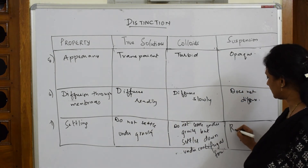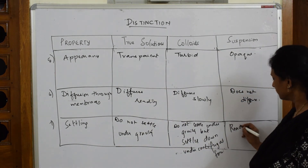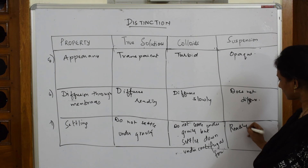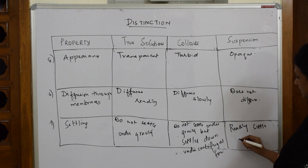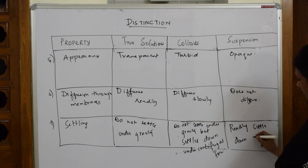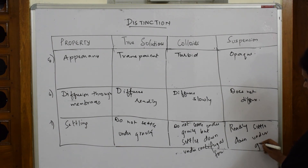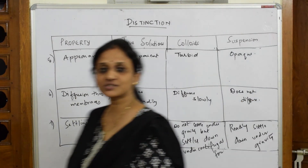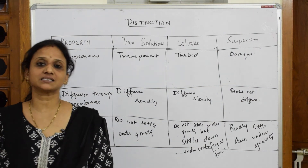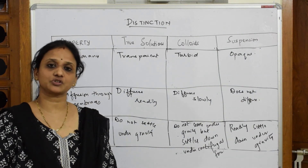For suspensions, the particle size is greater than 1000 nanometers, so they are heavy and readily settle down under gravity. That completes all the differences. Now let's come back and start with the colloids topic.